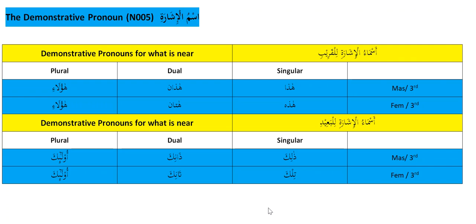From the root 'ashara, yushiru, ishara' meaning to point. For example, if I say 'ashartu ilal bab,' it means 'I pointed to the door.' In English we say demonstrative pronouns — examples are: this, these, that, those.